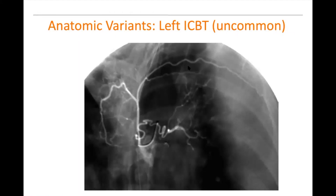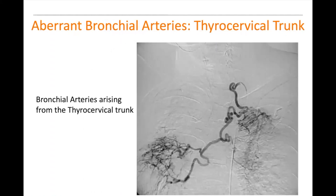This image shows a left intercostal bronchial trunk, with the first intercostal artery and left bronchial artery coming off the same trunk from the aorta. Going further — here is a bronchial artery arising from the left thyrocervical trunk, with our catheter going all the way up there, and both right and left bronchial arteries coming off.